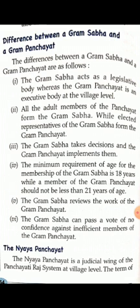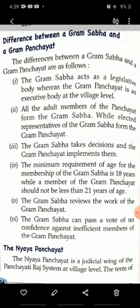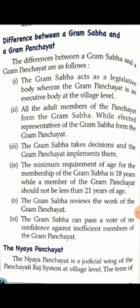Gram Sabha acts as legislative and Gram Panchayat acts as executive. All adult members — that is, those above 18 years of age — form the Gram Sabha. While elected representatives of the Gram Sabha form the Gram Panchayat. The age of Gram Sabha members is 18 years, and to become a member of Gram Panchayat, the age required is more than 21 years.